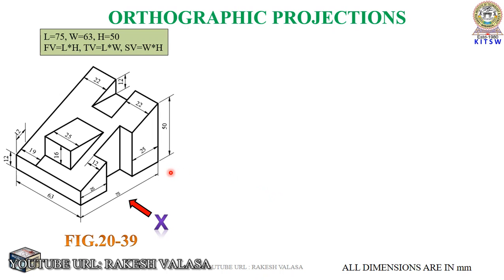Before going to draw this front view, let us note down the full dimensions. The full length for this object is 75 mm. Total width is 63 mm. Total height is 50 mm. Here I am telling a very easy method — that is the box method.